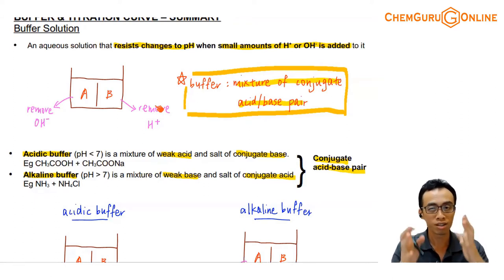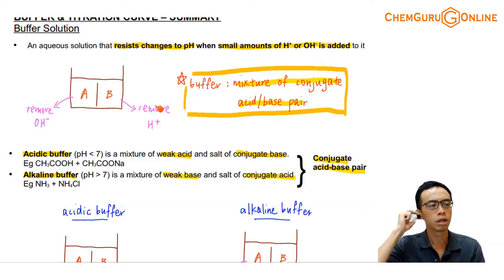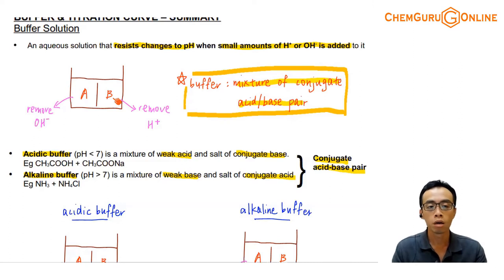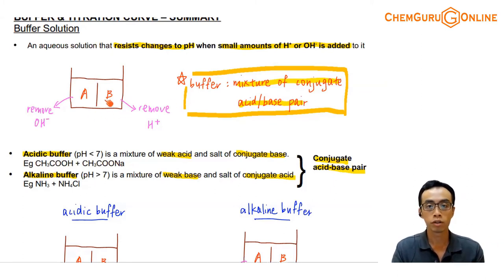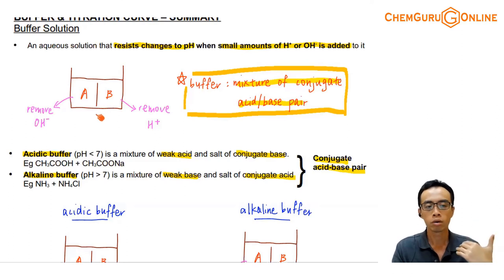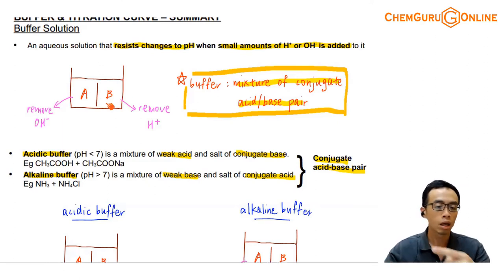That makes it a lot clearer — we know what is inside this buffer, it is just an acid and base. Something interesting is: if it is an acid and base, why don't they react with each other? Because usually acid and base undergo acid-base reactions. It's because this mixture of acid and base is a special mixture — it is a mixture of a conjugate acid-base pair, for example CH₃COOH and CH₃COO⁻, or NH₃ and NH₄⁺. They can co-exist because when the acid undergoes acid-base reaction it becomes the conjugate partner, and when the base undergoes acid-base reaction it becomes the conjugate partner — so they will always convert into each other and will not annihilate each other.